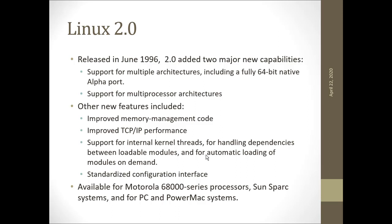Linux 2.0 was released in June 1996 and added two major new capabilities: support for multiple processing architectures and multiple hardware architectures, including a fully 64-bit native alpha port, and support for multiprocessor architecture. Other new features included improved memory management code, improved TCP/IP performance, support for internal kernel threads, handling dependencies between loadable modules, automatic loading of modules on demand, and a stabilized configuration interface. It was available for Motorola 68000 series processors and Sun SPARC.